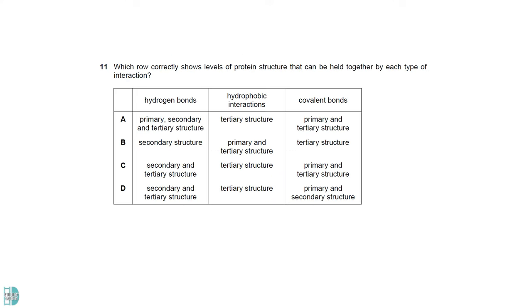Hydrogen bond is found in both secondary and tertiary structures. Hydrophobic interaction is only in tertiary structure. The covalent bond is found in the primary structure, as the peptide bond is covalent. It can also be found in the tertiary structure occasionally, due to the presence of disulfide bridges in some proteins.